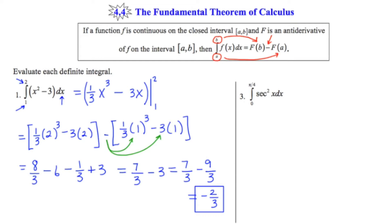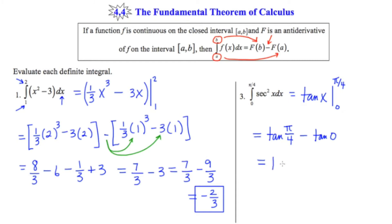We need to evaluate the definite integral of secant squared x from 0 to pi over 4. I'm going to start by finding the antiderivative of secant squared x, and that happens to be tan x. I'm not going to put plus c, because plus c is reserved for indefinite integrals. This one has a definite beginning and a definite ending, so I'm not going to put plus c. I'm going to use this bar and put a 0 on the bottom and pi over 4 on top. I'm going to plug in pi over 4 first, then plug in 0, and find the difference. The tangent of pi over 4 is 1, and the tangent of 0 is 0. The difference between 1 and 0 is going to be 1, so the answer is 1.